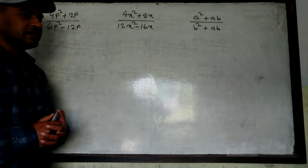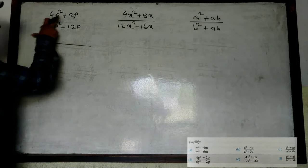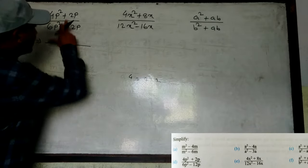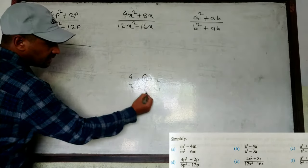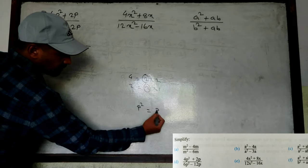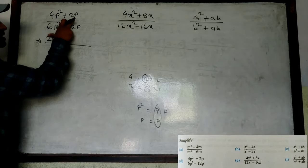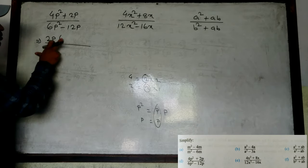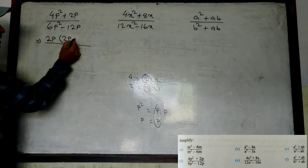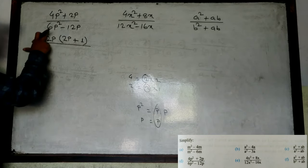Now the next three questions on the board — I'm going to start from this one. Here we have variables and numbers both. From 4 and 2, what is the common? 4 means 2×2, and 2 means 2×1, so common is 2. p² means p×p and p means only 1 p, so common is p. Therefore from 4p² + 2p, common is 2p. What is remaining? 2×something = 4, so 2. From p², p common, remaining is p. Plus: 2p already common, so nothing remaining — write 1.